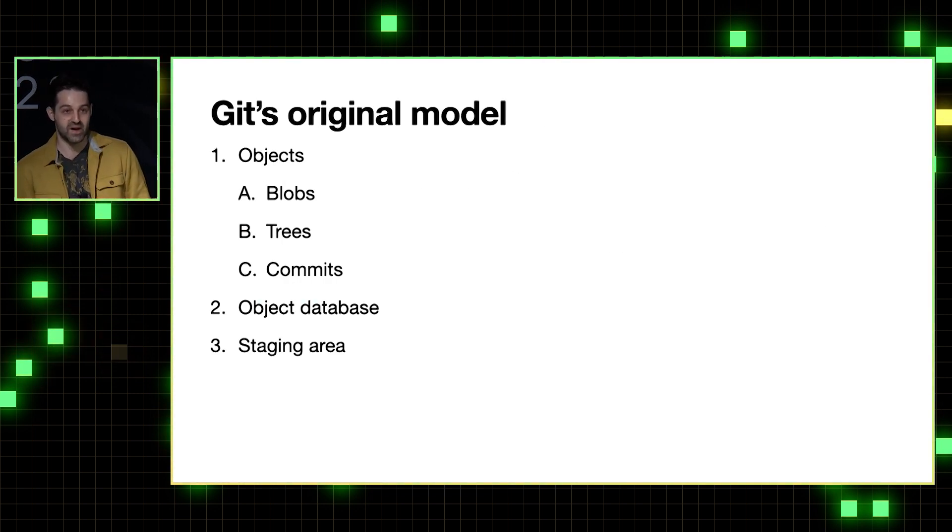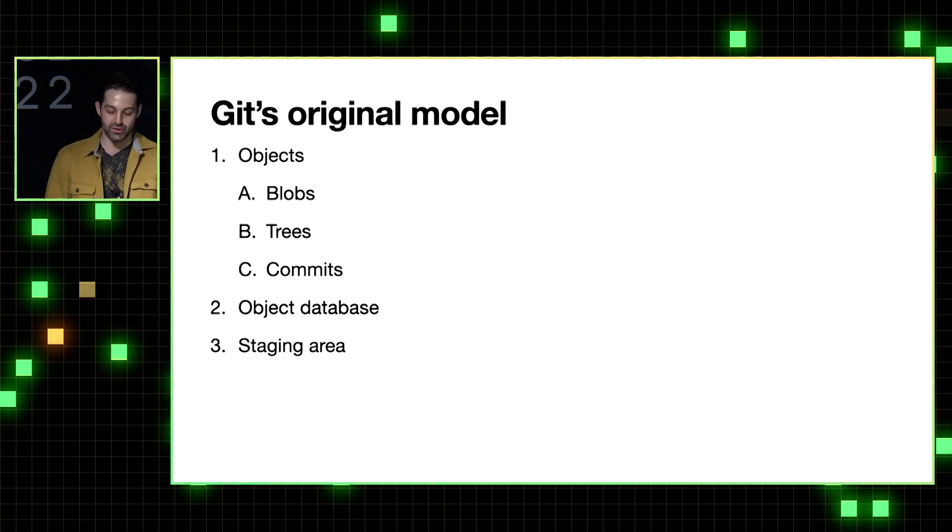So Git's original model implemented three main components, starting with objects. And that includes blobs, trees, and commits. Note that tags were not implemented yet in the initial commit. Next we have the object database, and third is the staging area.